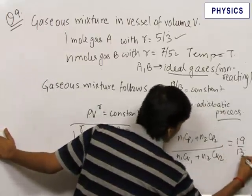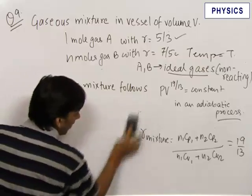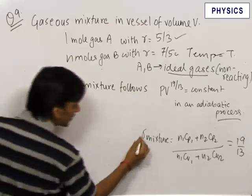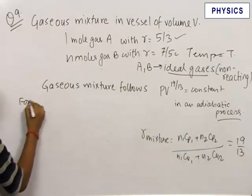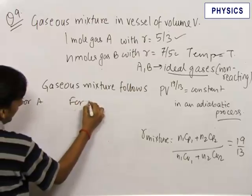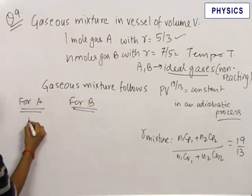So let us first find out the values of Cp and Cv for gases A and B. For A and for B, the number of moles for A is 1. The number of moles for B is n.